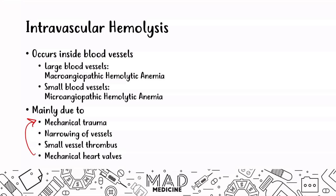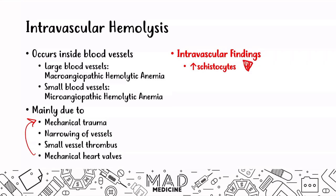When it comes to intravascular findings, they are a little different from extravascular findings. In intravascular hemolysis, you are lysing the red blood cells within the vasculature, and because of this you're going to see the byproducts of that lysis in the blood. You're going to see schistocytes, also known as helmet cells — these are cells floating in the bloodstream that have been lysed. They don't look like a normal red blood cell; they look kind of triangular.